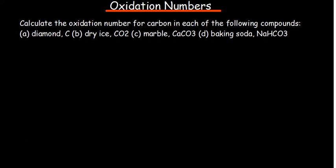Calculate the oxidation number for carbon in each of the following compounds. The first one is diamond — just carbon in its elementary form. So what should we expect? According to the oxidation number rules, carbon in its elementary form has an oxidation number of zero. Number two is carbon dioxide — we want to find the oxidation number of carbon in CO₂.